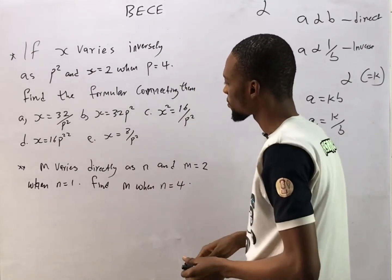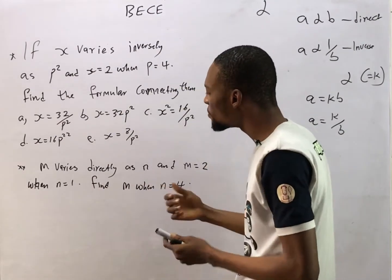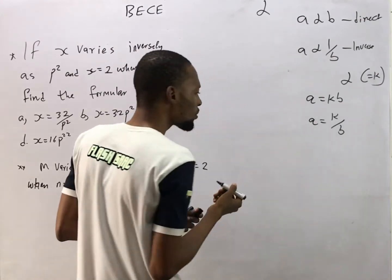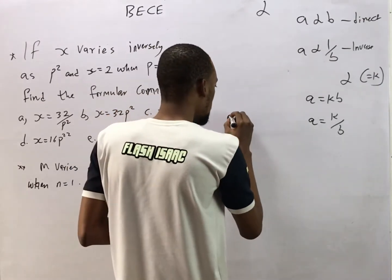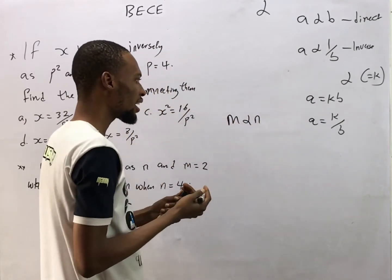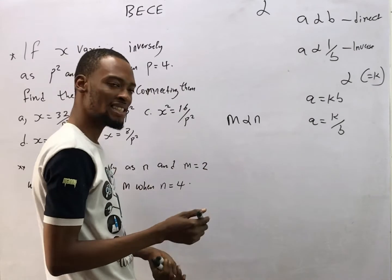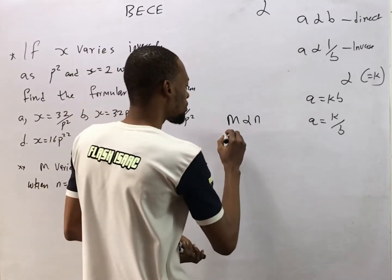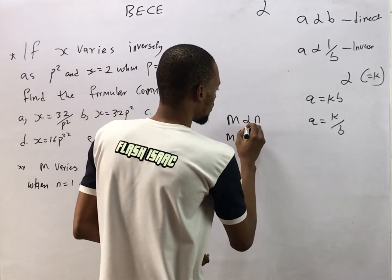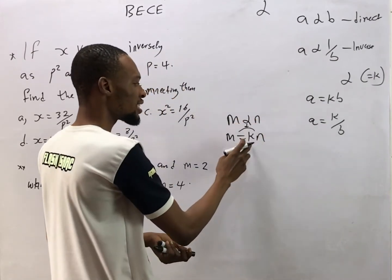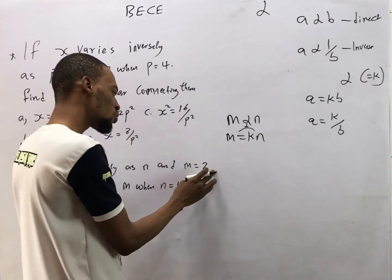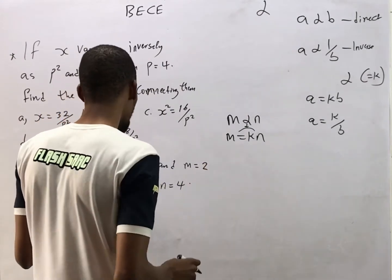Now let's look at the questions. I'll prefer we start with this second one. It says m varies directly as n. This is how you represent that: m ∝ n. Changing this to an equality sign, it becomes m = kn. Now they say m equals 2 when n equals 1.